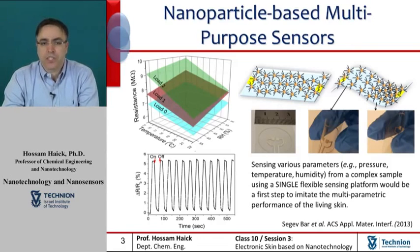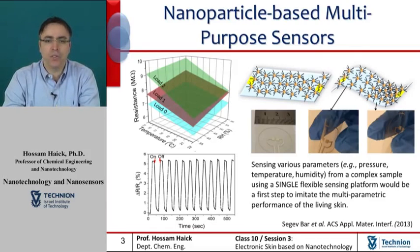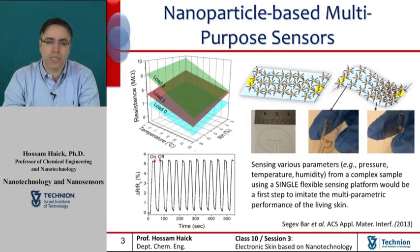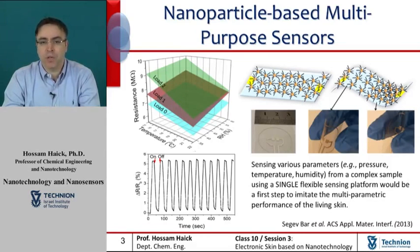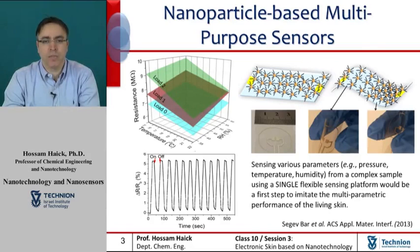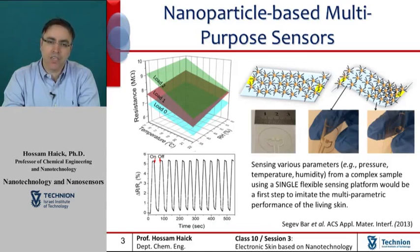Sensing various parameters such as pressure, temperature, and humidity from a complex sample using nanoparticles would be an essential step towards imitating the multiparametric performance of human skin. As a proof of concept, a prototype based on monolayer-capped nanoparticle technology has been prepared and tested. This prototype demonstrated the use of different protecting molecules on a flexible substrate to sense temperature and humidity in an uncoupled manner, providing evidence that multi-sensing can be achieved using a single platform, just like human skin.